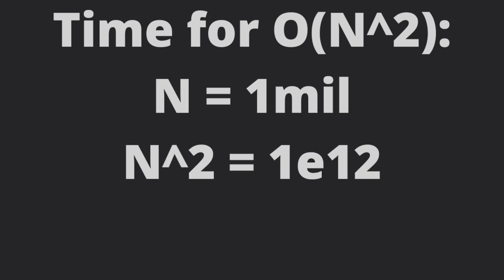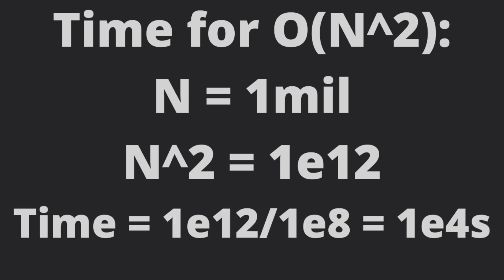Now, let's say we had an n square algorithm. How long will that take? If n is a million, n square is 10 to the power 12. And if you divide it by 10 to the power 8, you get 10 to the power 4 seconds. That is about 2.7 hours. You can run it for yourself and see how close the estimate is.